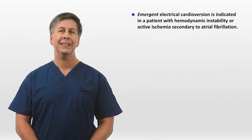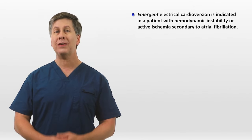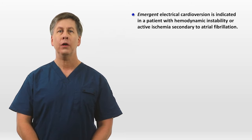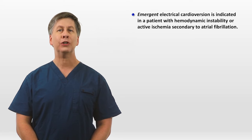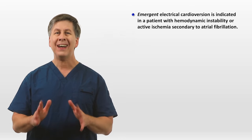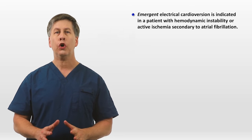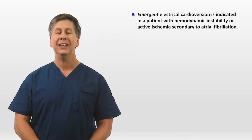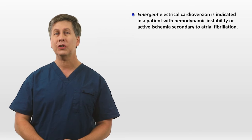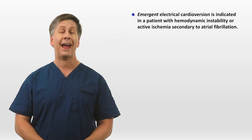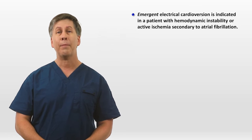Let's start with cardioversion. Emergent electrical cardioversion is indicated in a patient with hemodynamic instability or active ischemia secondary to the AFib, where active ischemia is manifesting as anginal pain at rest. The term emergent cardioversion here does not necessarily mean call a code and shock the patient as quickly as humanly possible. Awake cardioversion is extremely unpleasant, and depending on the situation, there is often — though not always — adequate time to get anesthesia to the bedside and provide sedation first.